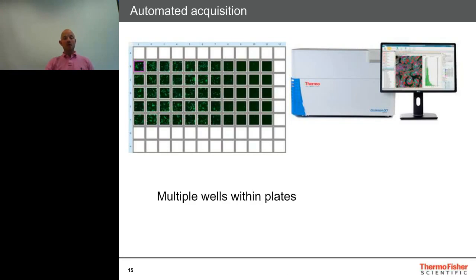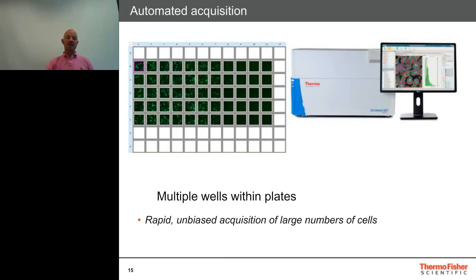More often than not, we're using multi-well plates — 96-well plates or 384-well plates. We can also image regular glass coverslips, petri dishes, and slides. What wells within those plates give you is the ability to do multiple replicates when looking at concentrations of compounds, or to look at large numbers of genes in an siRNA library, or a large number of compounds within a small molecule library. This gives us rapid and unbiased acquisition of a large number of cells.